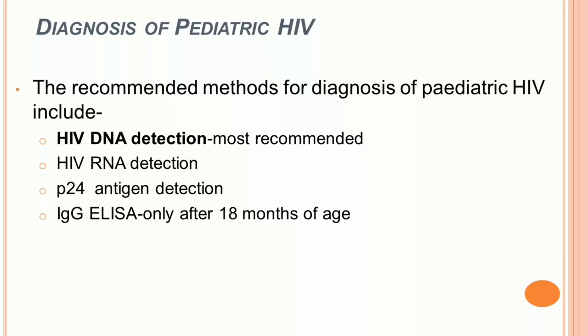Recommended methods for diagnosis of pediatric HIV include HIV DNA detection (the most recommended), HIV RNA detection, P24 antigen detection, or IgG ELISA — which can be done only after 18 months of age. Antibodies transferred from an HIV-infected mother to the baby can be detected in the infant's serum, potentially giving false-positive results, so antibody detection tests are done only after 18 months of age.